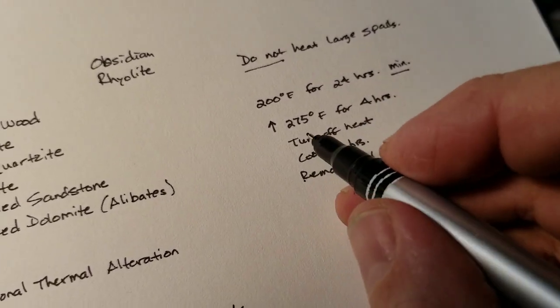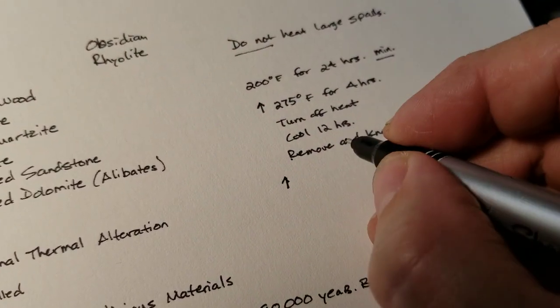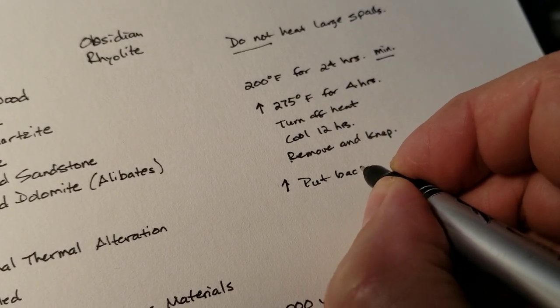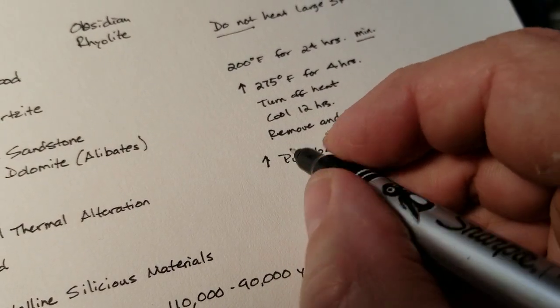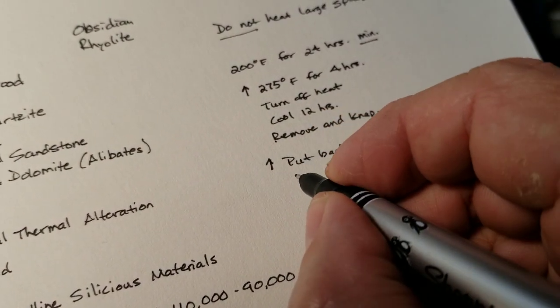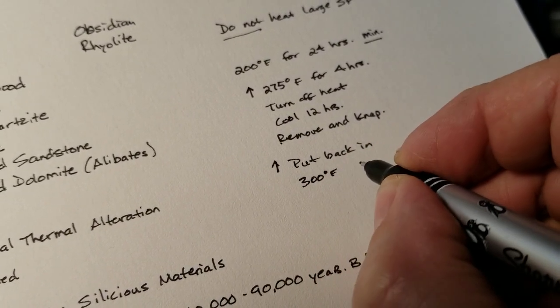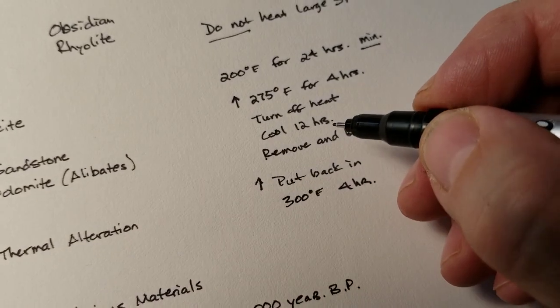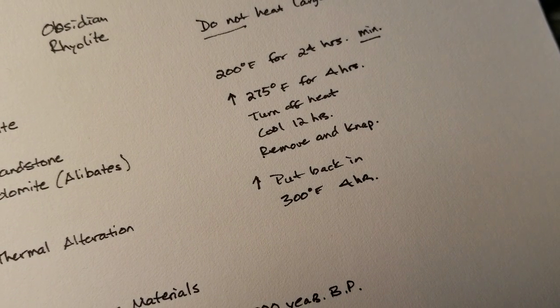If it doesn't nap and it's still pretty tough, you put it back in. Put back in, heat at an increase of 25 degrees, so 300 degrees, four hours, and then repeat. Turn off the heat, cool for 12 hours, and remove and nap.